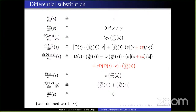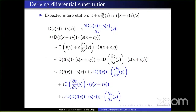Differential substitution in this calculus is slightly more involved. The main difference is the rule for differential substitution of a differential application — in the differential lambda calculus this rule only has two terms, but because we work with finite differences we need to add a higher second-order term. This seemingly trivial difference makes many proofs much harder due to a combinatorial explosion in the size of terms involved, which you don't get in the differential lambda calculus.